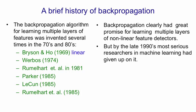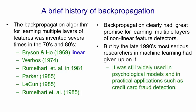But it didn't really live up to its promise, and by the late 1990s, most of the serious researchers in machine learning had given up on backpropagation. For example, in David MacKay's textbook, there's very little mention of it. It was still widely used by psychologists for making psychological models, and also quite widely used in practical applications such as credit card fraud detection. But in machine learning, people thought it had been supplanted by support vector machines.